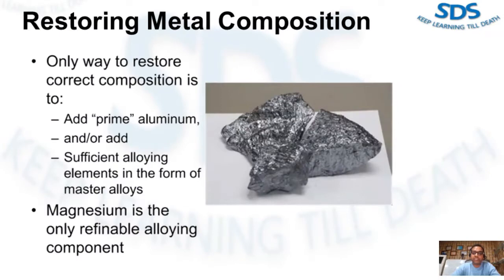When metal analysis is out of composition, the only way to restore the correct composition is to either add prime aluminum and/or sufficient alloying elements in the form of master alloy as required to restore the correct metal level. Magnesium is the only refinable alloying component.